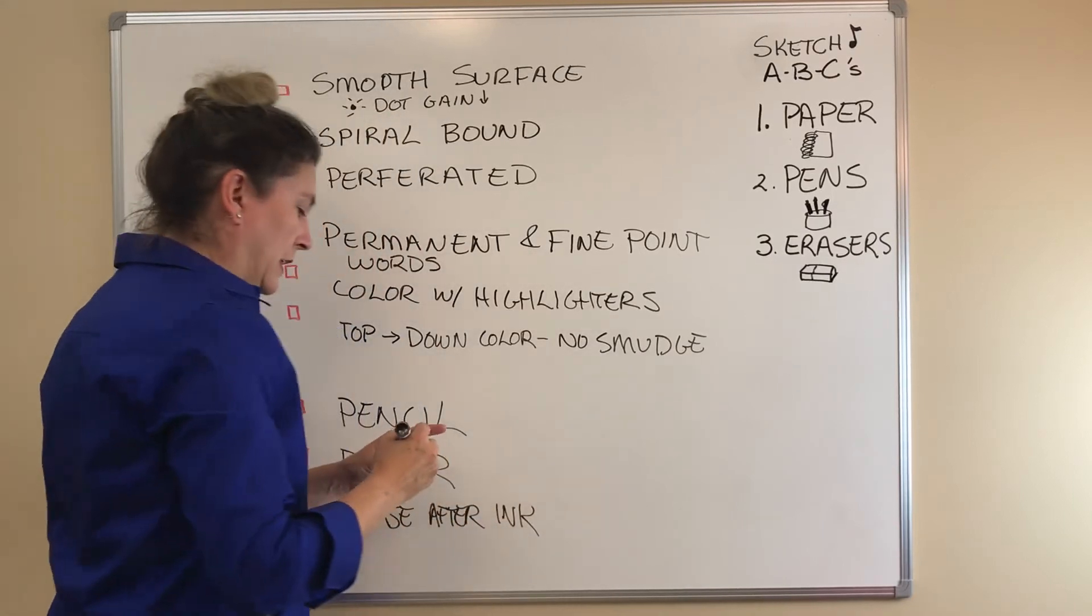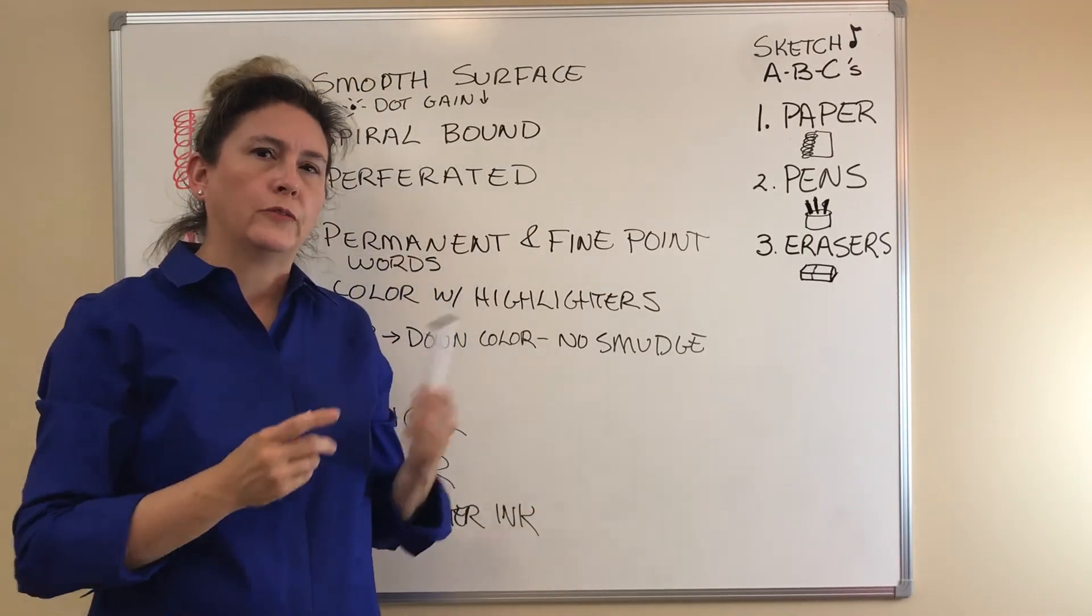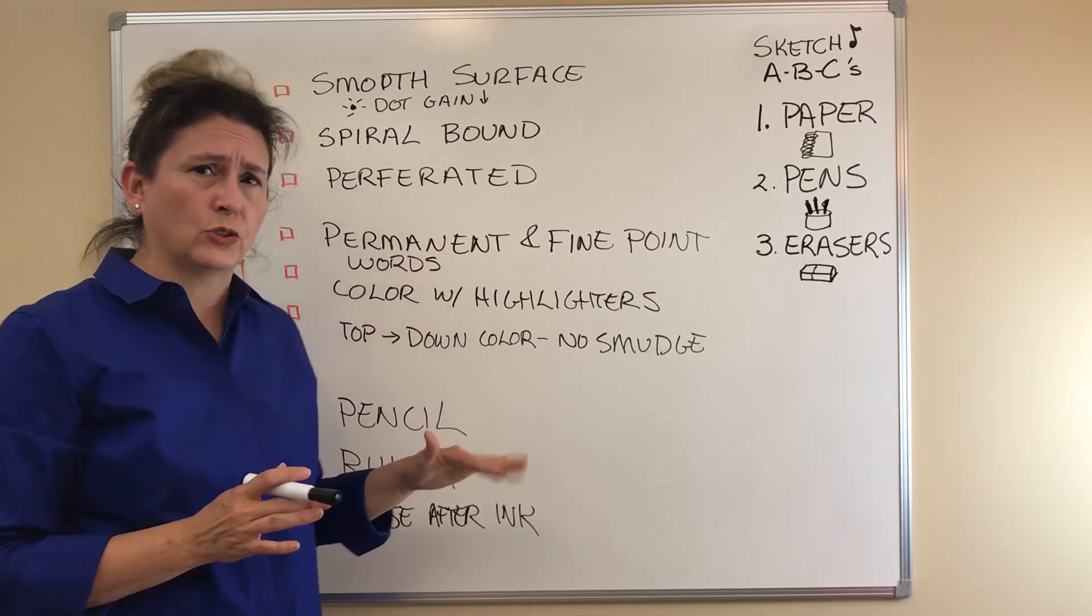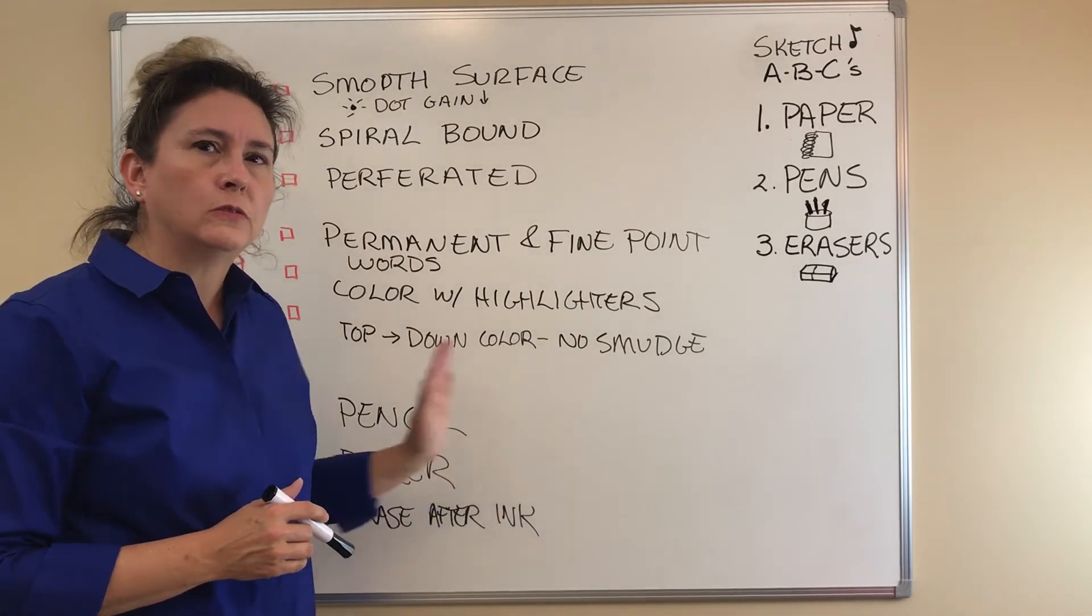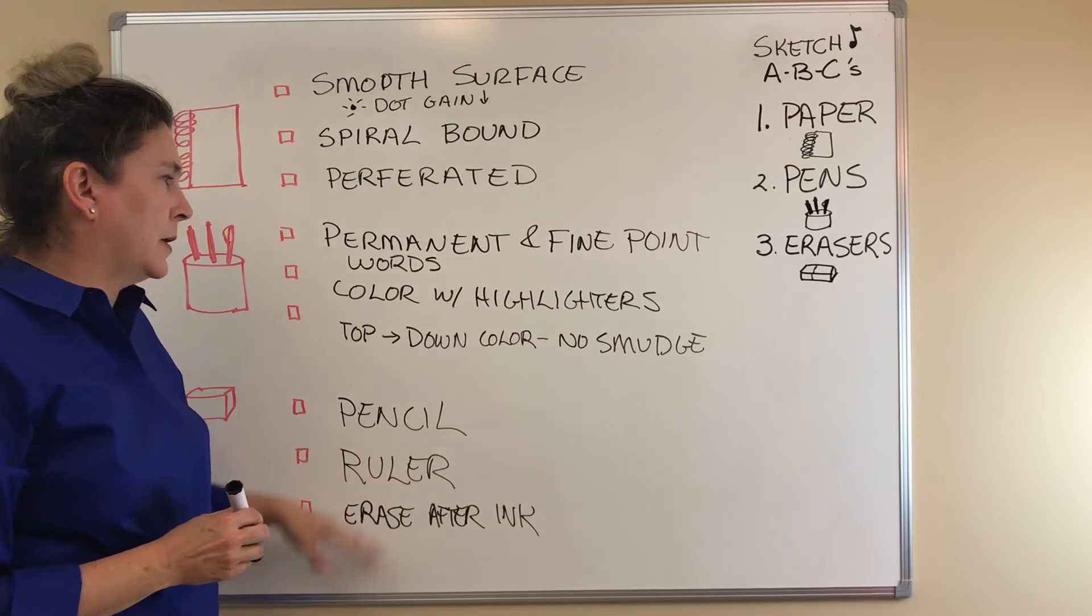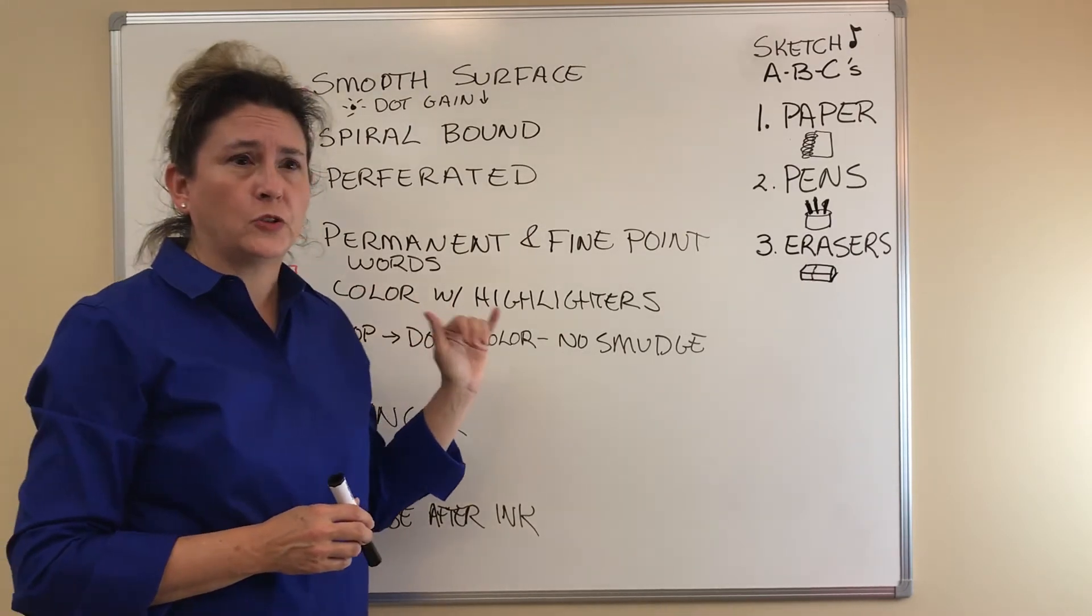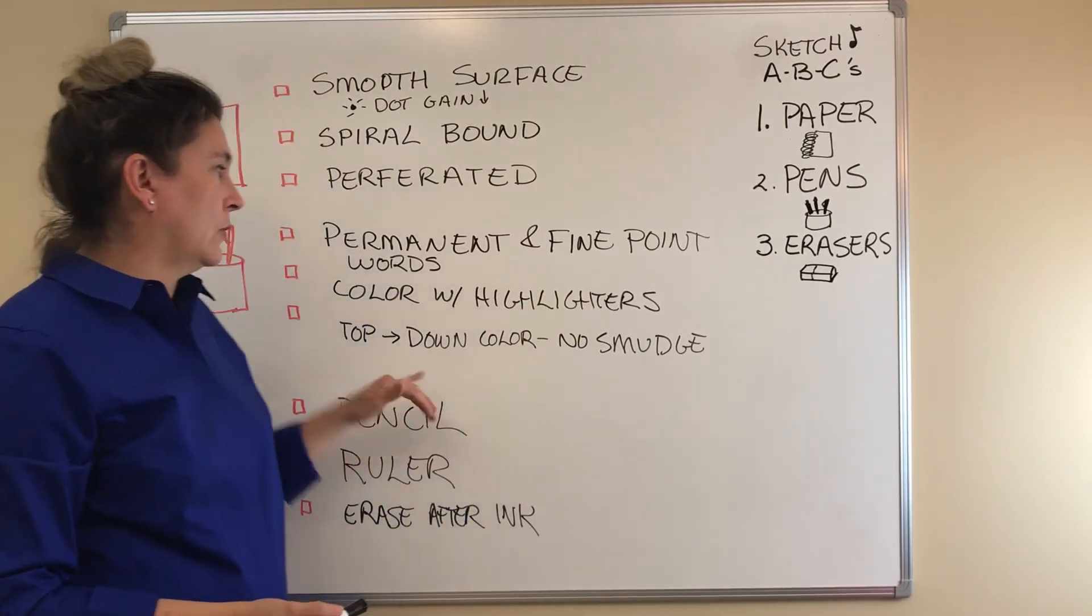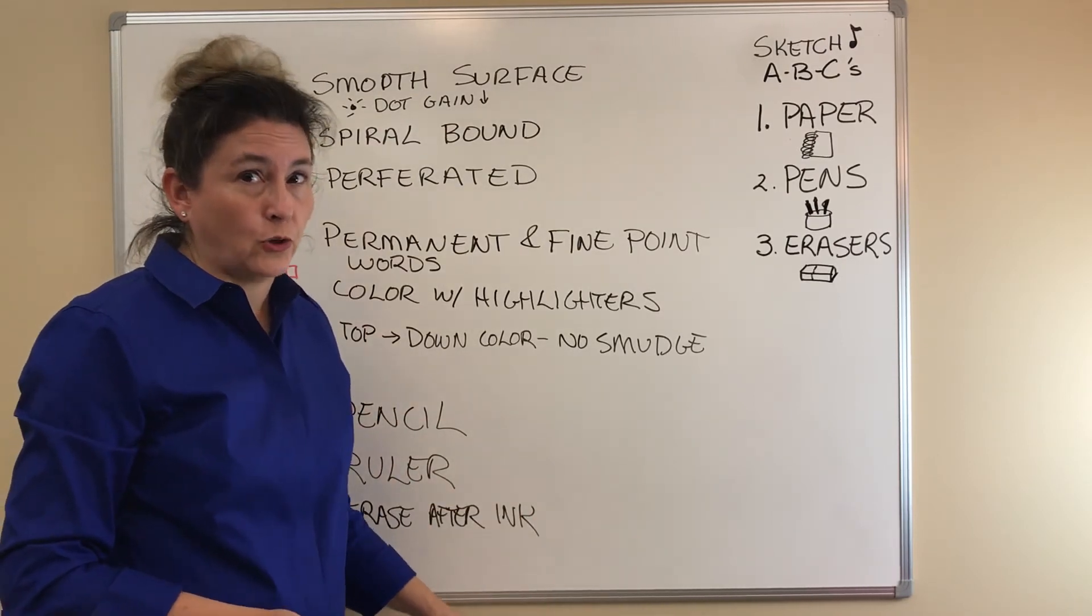Now, a lot of times I will be done with all the words with the permanent fine point. And when that's all dry, there's no smudging going on, then I go ahead and erase all my little guidelines, any pencil marks, and then I do my highlighter. Because the highlighter may smudge, especially if you're going a mile a minute and you haven't checked to see if things are dry. So put your guides in, but erase only after you know everything is dry.